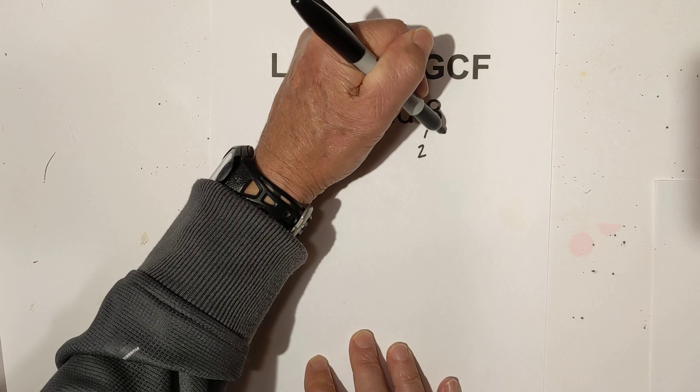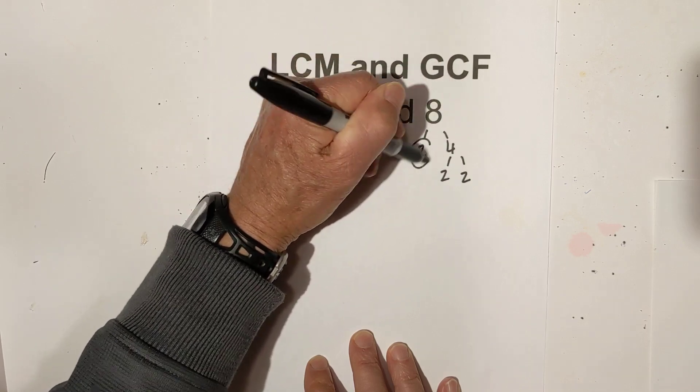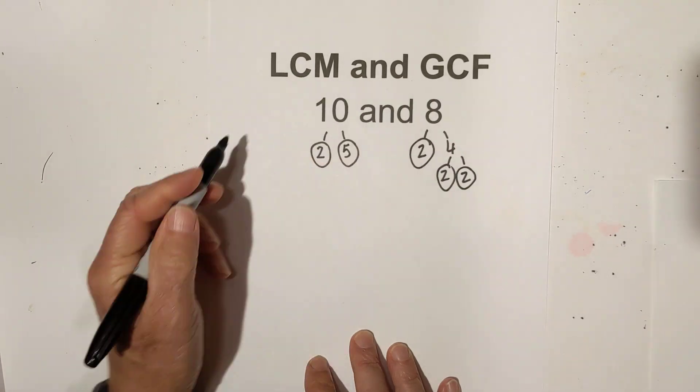And now for the 8, you have 2 times 4 and then 2 times 2. Circle all the 2s because they're prime numbers, so you're down to prime.